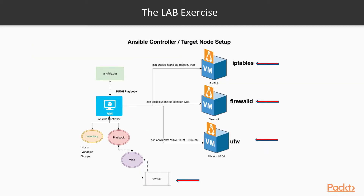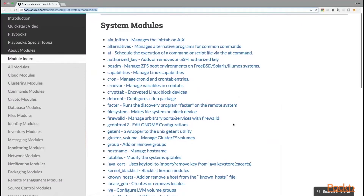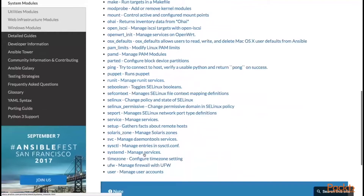The lab exercise: this is our lab diagram which shows we are going to add a new role, firewall, in the playbook and configure IPTables on Red Hat 6, FirewallD on CentOS 7, and UFW on Ubuntu VM using Ansible modules. We will utilize the Ansible system module, including the Ansible FirewallD module, IPTables module, and UFW module.